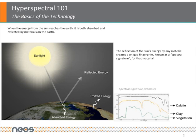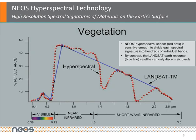Increased numbers of bands, or segments of the spectral signature, result in increased accuracy in identifying specific materials. The NEOS hyperspectral sensor has hundreds of individual bands in each spectral signature. By way of example, this is in sharp contrast to the Landsat satellite's six bands, which are shown in blue on this graph.